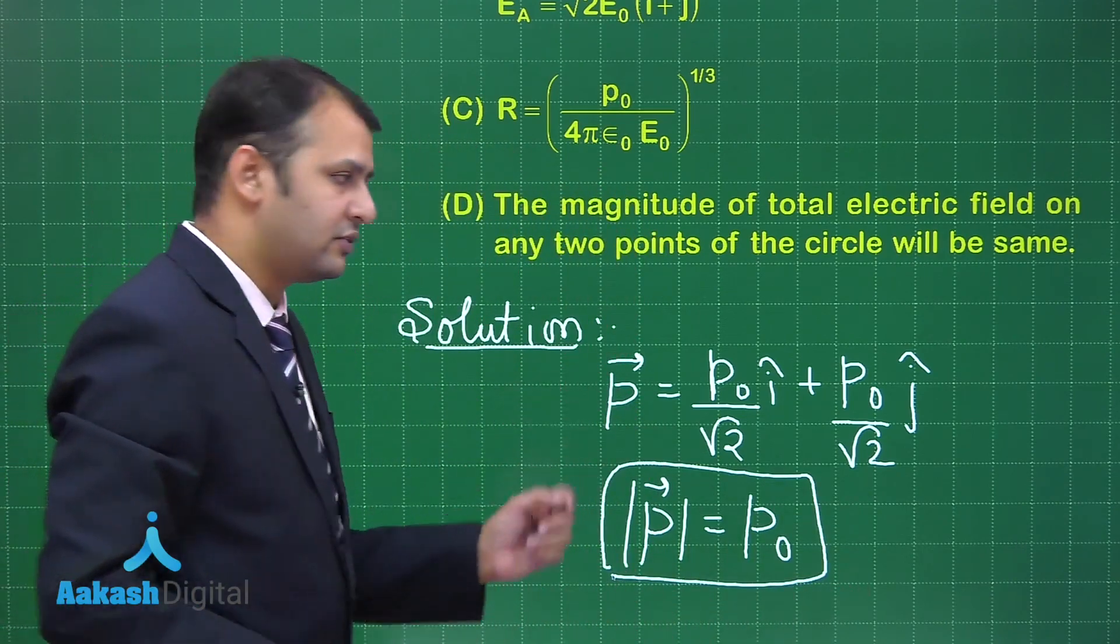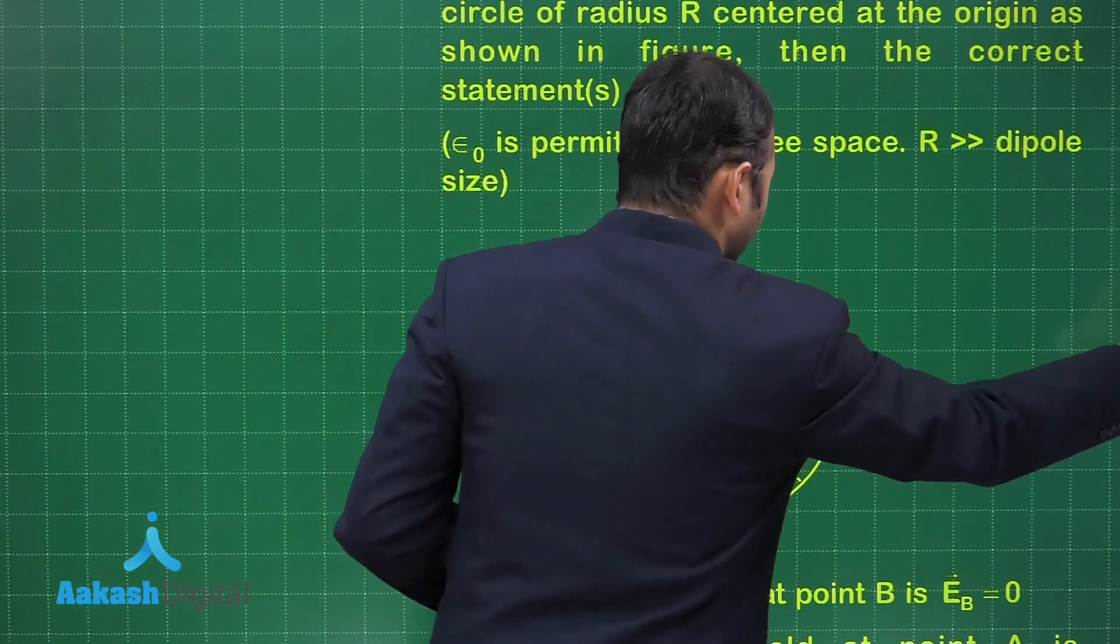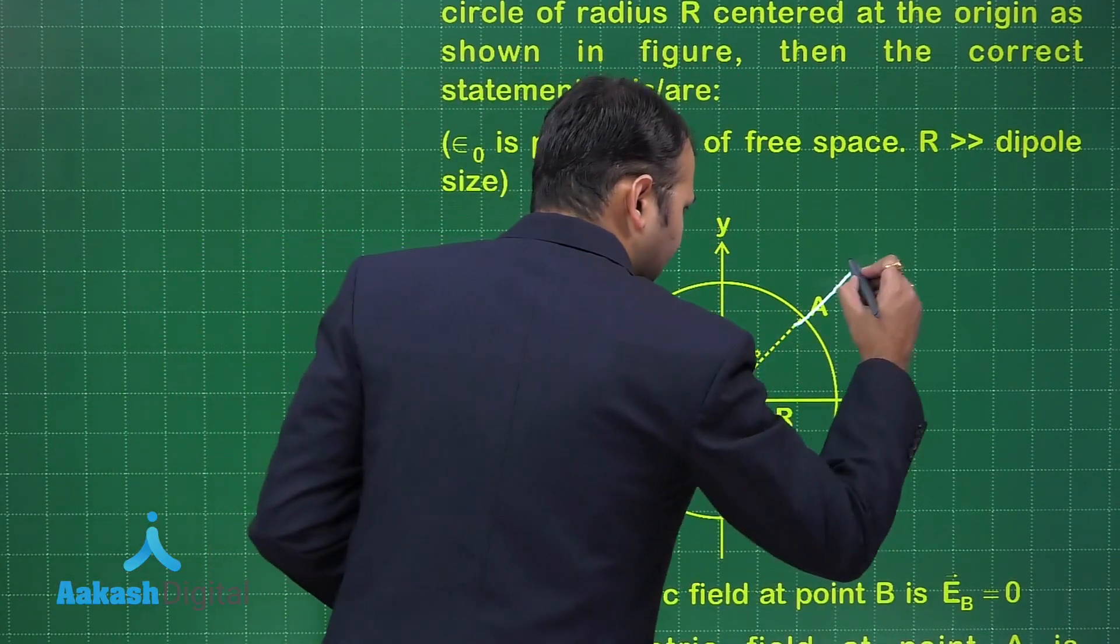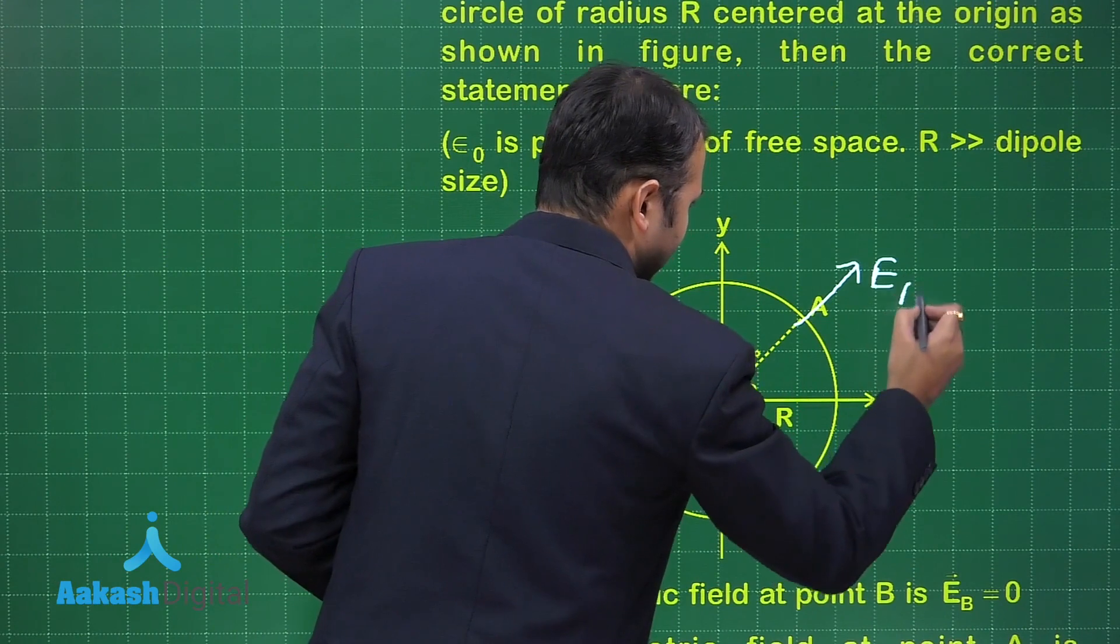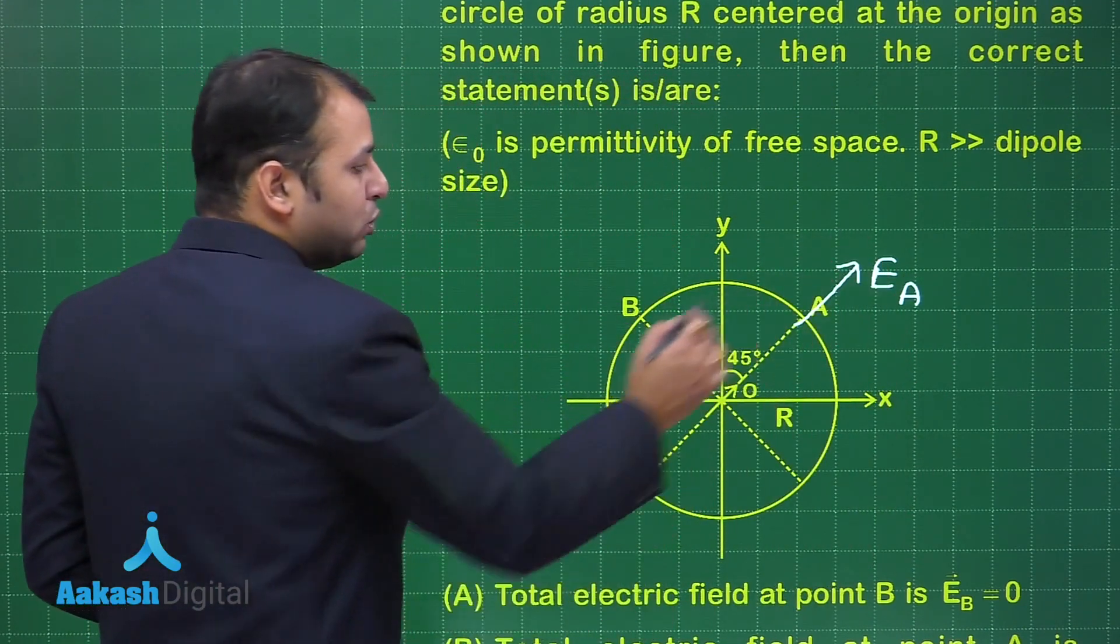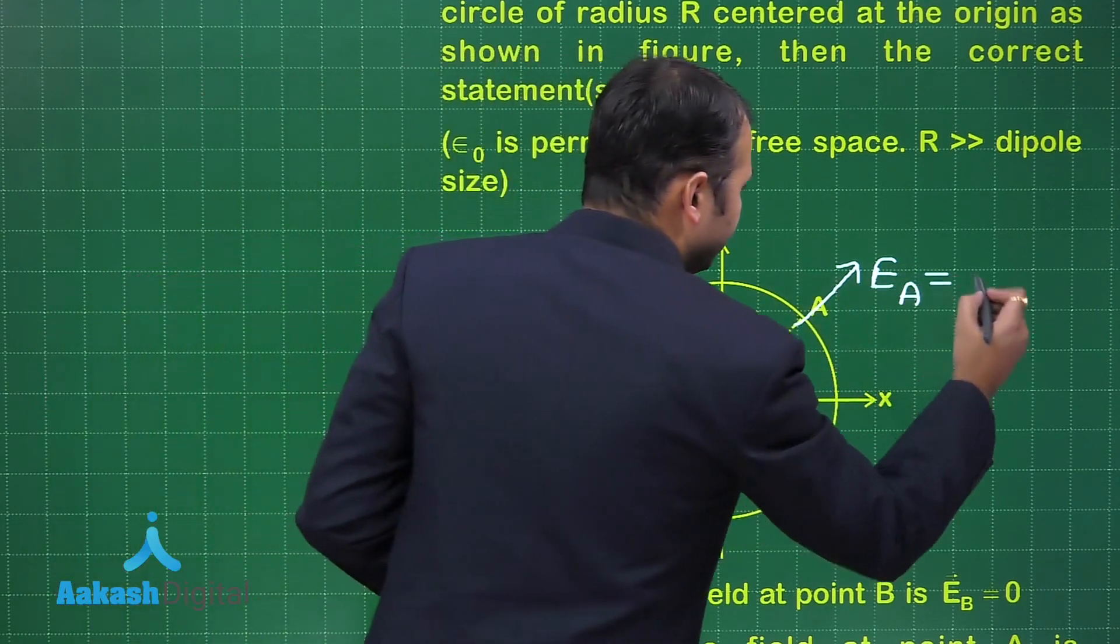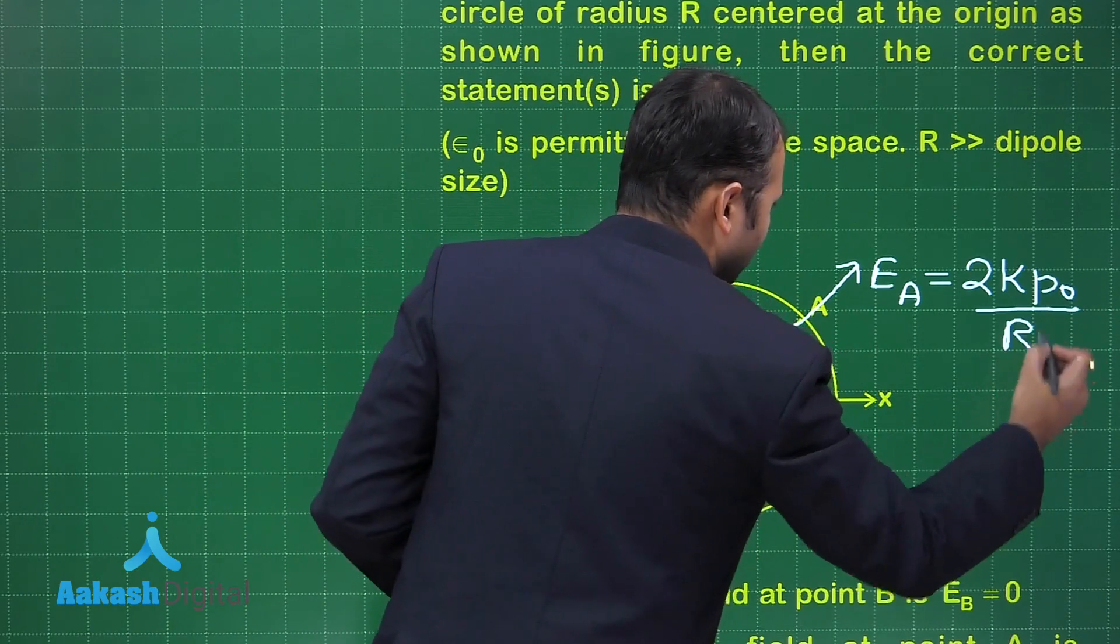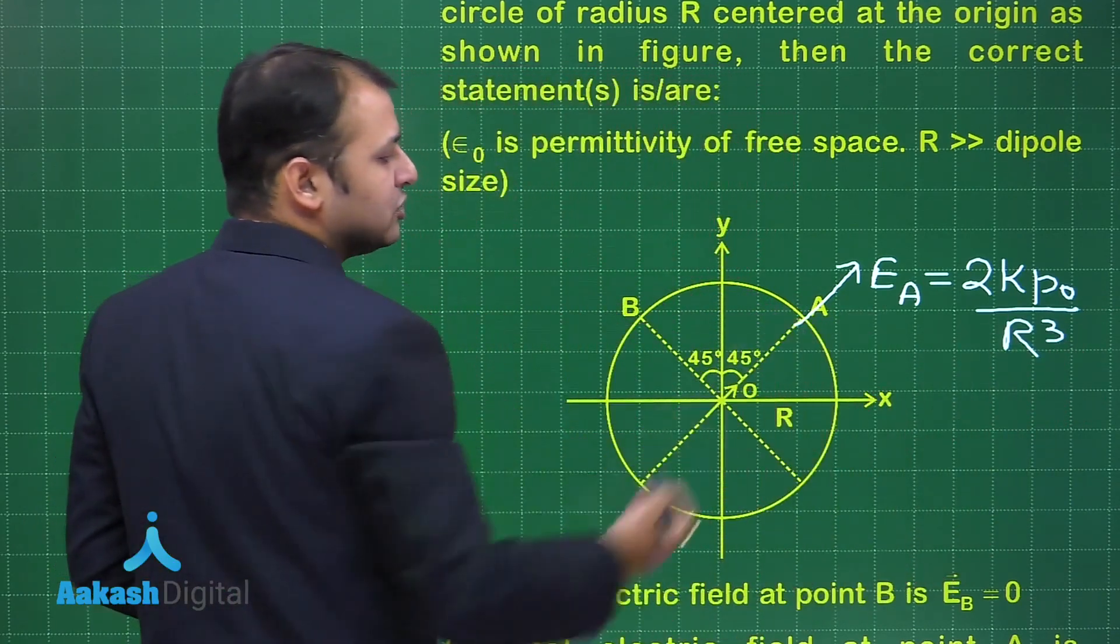Now when you have the magnitude, let's talk about the direction of electric fields. When you see the diagram, you will find that this dipole will exert an electric field Eₐ, that is axial electric field at this point A, which should be in line with the dipole moment and the magnitude would be 2kP₀/R³, R being the radius of the circle.